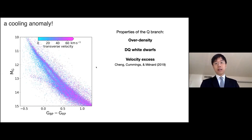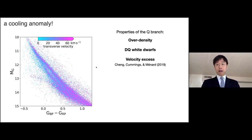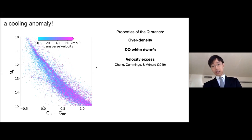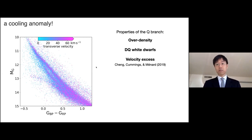The third reason is that we checked the velocity distribution of these white dwarfs, which finally led us to realize that the Q branch is actually a cooling anomaly — something not explainable by existing cooling models.